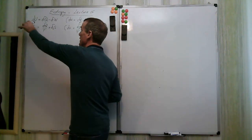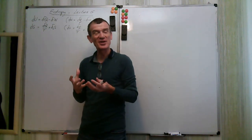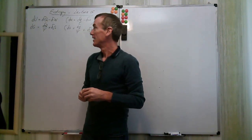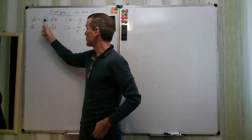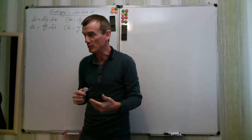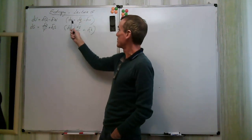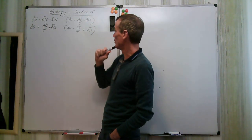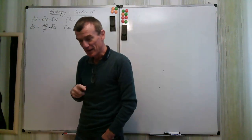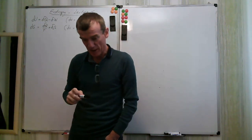We can liken this to our energy equation, where we've got the property on the left hand side — a change of property, energy — and on the right hand side we have our transfer terms, but no production terms, just transfers of work and heat. We can write that also divided through by the mass of the system: du = dq minus dw. And similarly for the entropy equation.